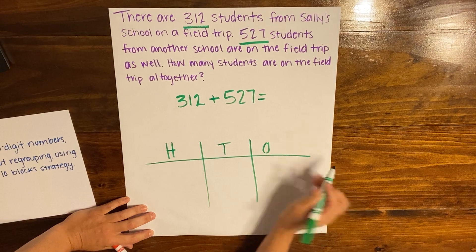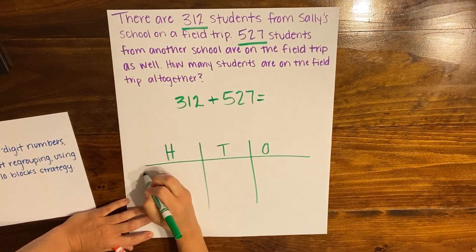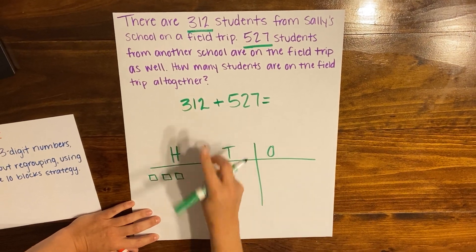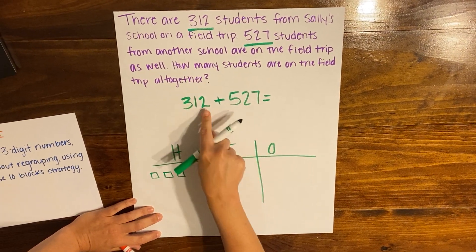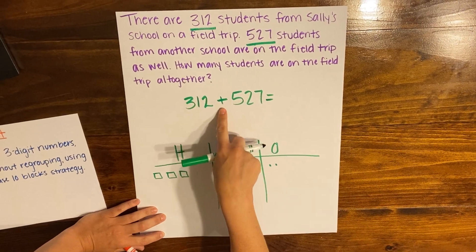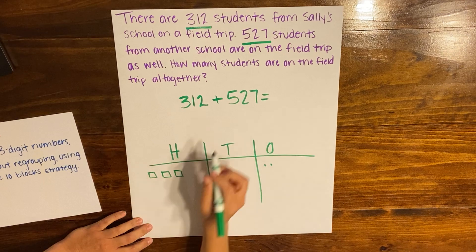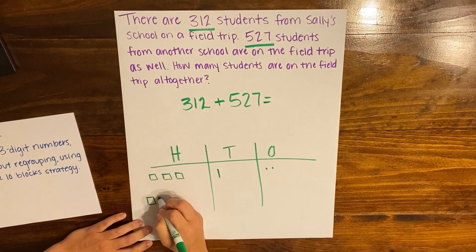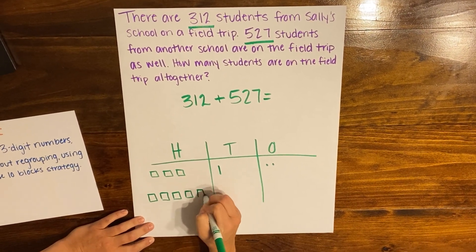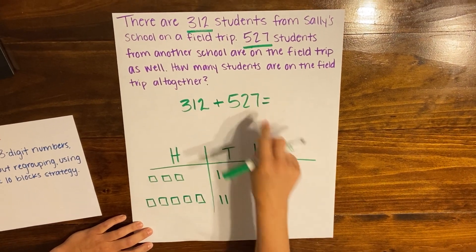I'm going to start by drawing out 312. In 312, there are three hundreds, one ten, and two ones. To add them together, I now need to draw 527 as well, so I have five hundreds, two tens, and seven ones.